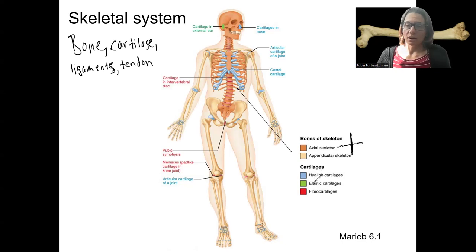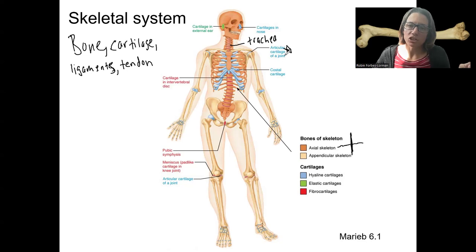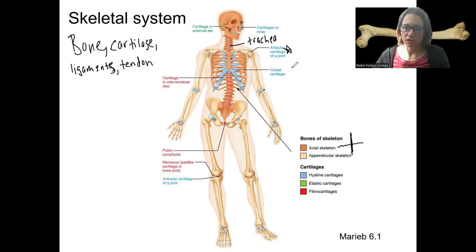Also shown here are the cartilages that are important for connecting bones together and supporting the skeletal system. Hyaline cartilage is the light blue. A couple of places — costal cartilage, the trachea would be another place we've seen hyaline cartilage. The place it's most prevalent in the skeletal system is as articular cartilage. Anywhere there is blue — between each of these joints, the fingers, all throughout the body — this is hyaline cartilage called articular cartilage because it's at an articulation where a bone meets another bone.